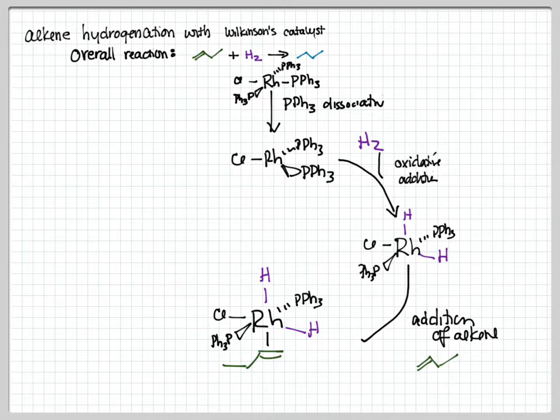But now, before we had an electron-deficient rhodium 3, now we have a fully saturated rhodium 3. So the next thing that's going to happen is we're going to have 1-2 insertion of the alkene into the rhodium hydride bond. We're just going to imagine that the alkene hops into that rhodium hydride.